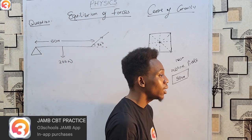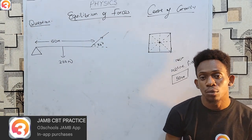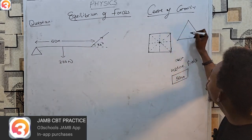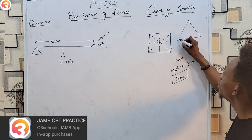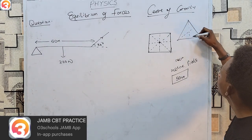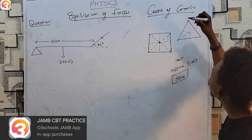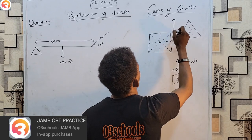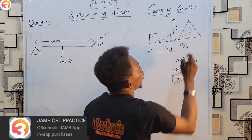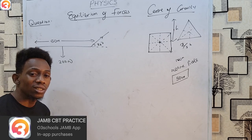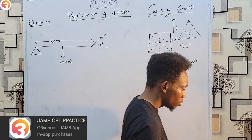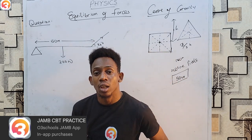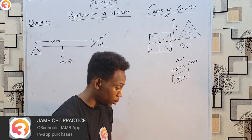For a uniform meter rule — 100 cm long — the weight acts at the 50 cm mark. If the beam is non-uniform, they will tell you where. For a triangle, the center of gravity is at two-thirds of the height. For our solving purposes in this topic, we are mostly using rectangular beams, so the center of gravity is usually at the middle if the beam is uniform.